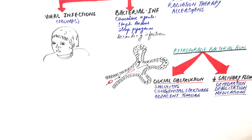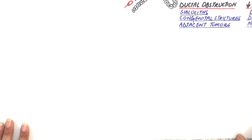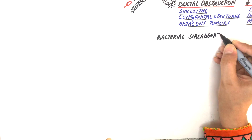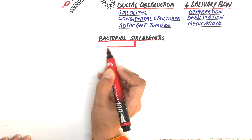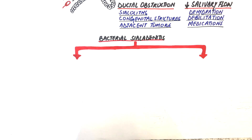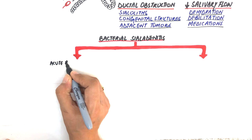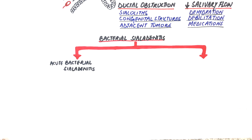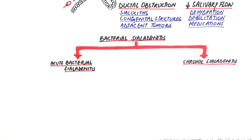Since there are so many causes of sialadenitis, the focus of this video is sialadenitis resulting from bacterial infections only. Bacterial sialadenitis may either have an acute phase called acute bacterial sialadenitis, or it may progress to a chronic phase called chronic sialadenitis. Now let's talk about each one individually.